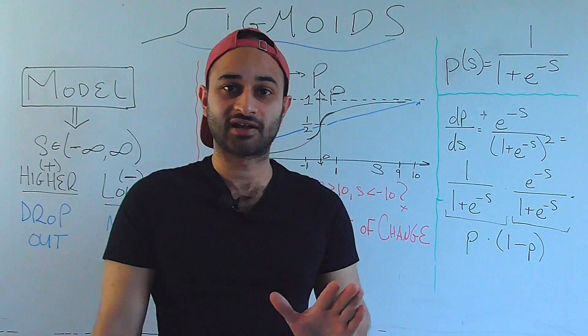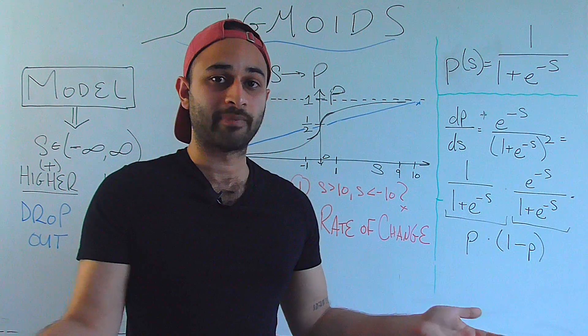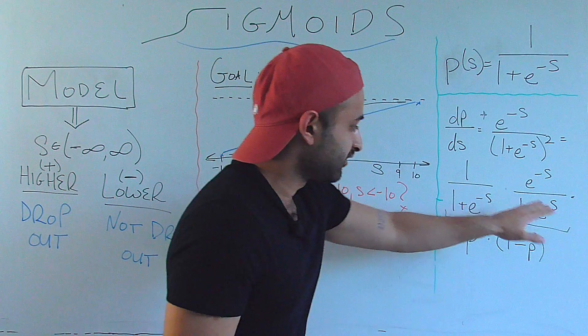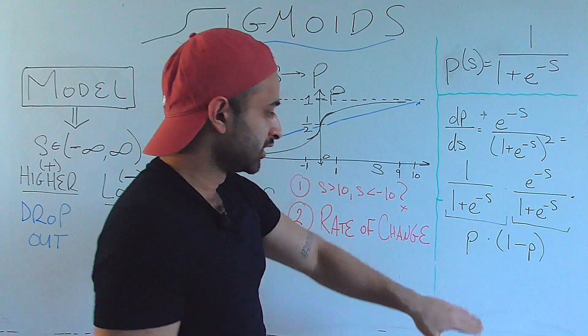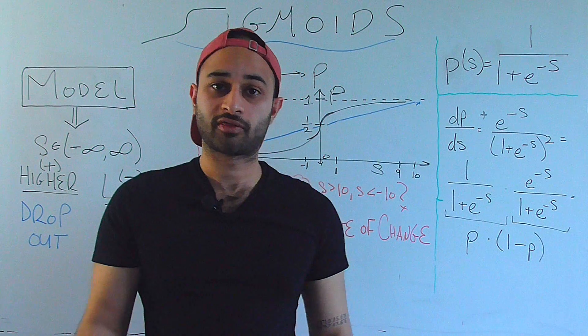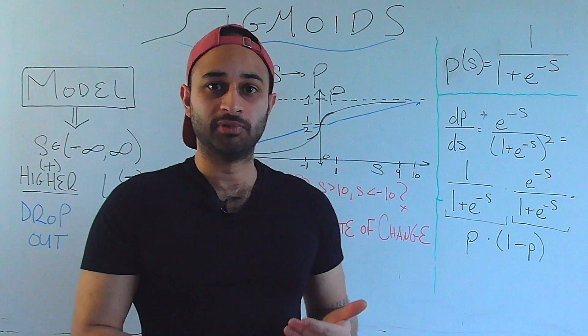And the last case to consider before we close the video is what if the probability was a half, which means we have exactly no information to help us with this problem. We're equally certain the student will or will not drop out. Well, then we actually get this function to achieve its highest value, which is one-fourth, because one-half times one-half is one-fourth.